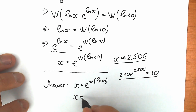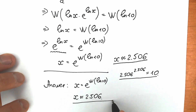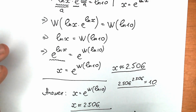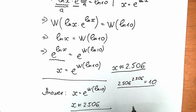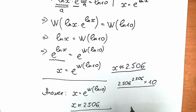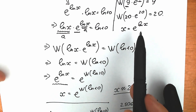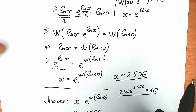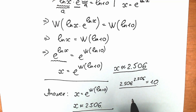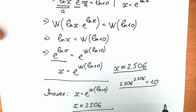The approximate answer is x approximately equal to 2.5506, which is really great. I hope you understand my explanation, learned something new, and your answer matches mine. This is a really interesting question for applying Lambert W function. In math, we need to find interesting tricks — we need to know about e, natural log properties, and a lot more. This question is great for practicing Lambert W function and equation-solving skills.